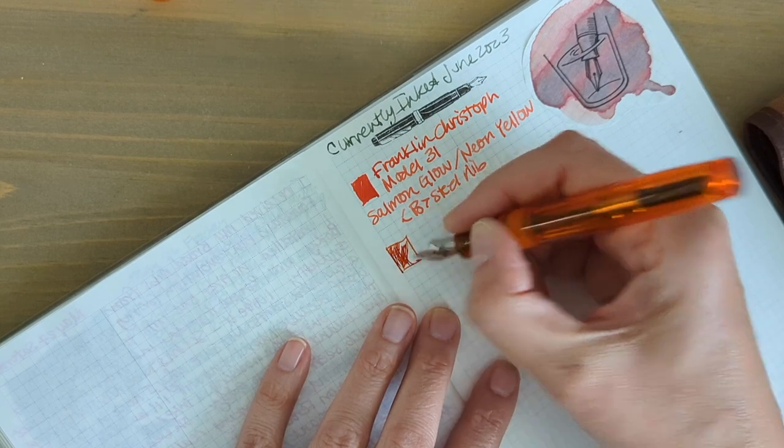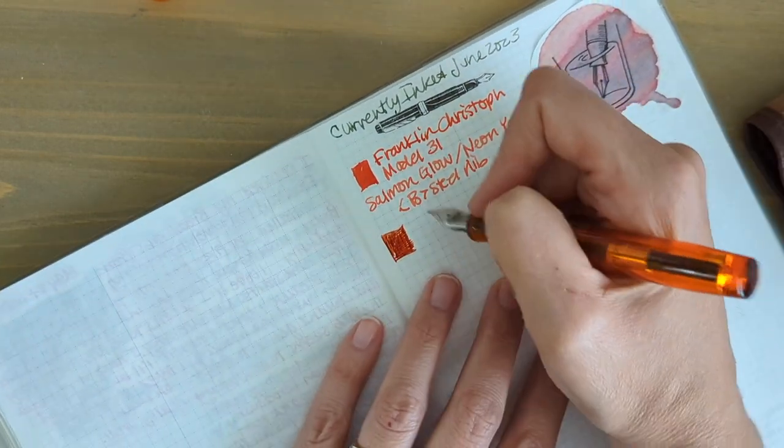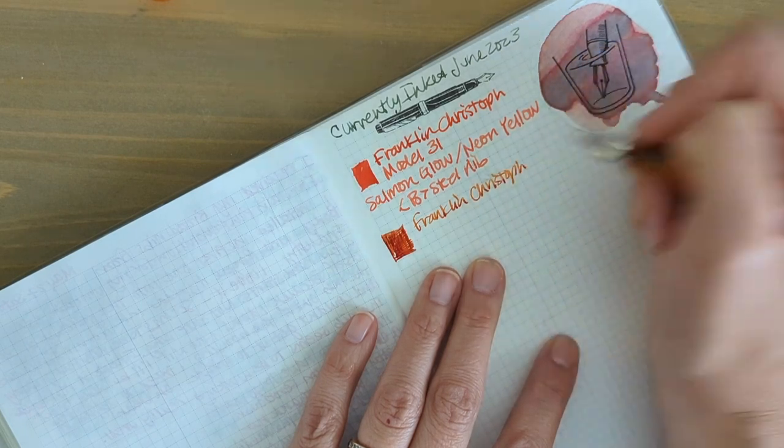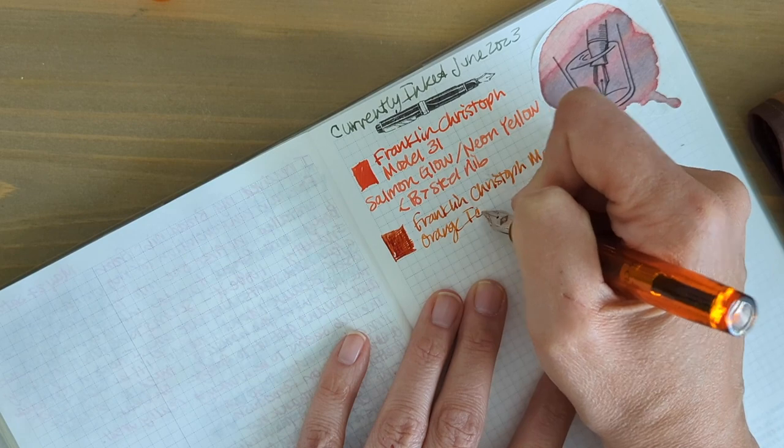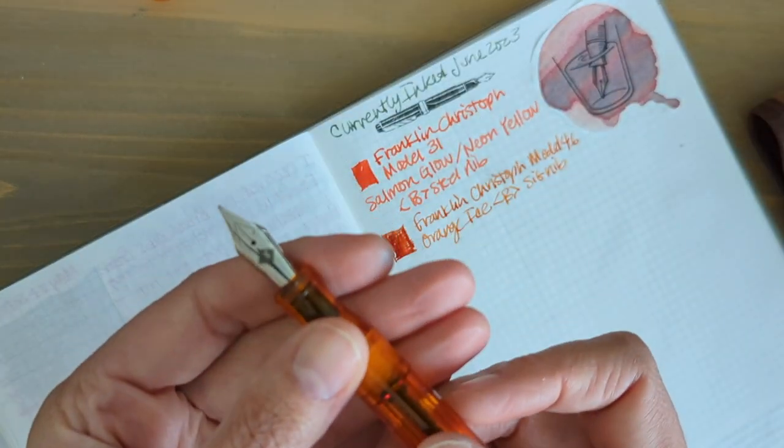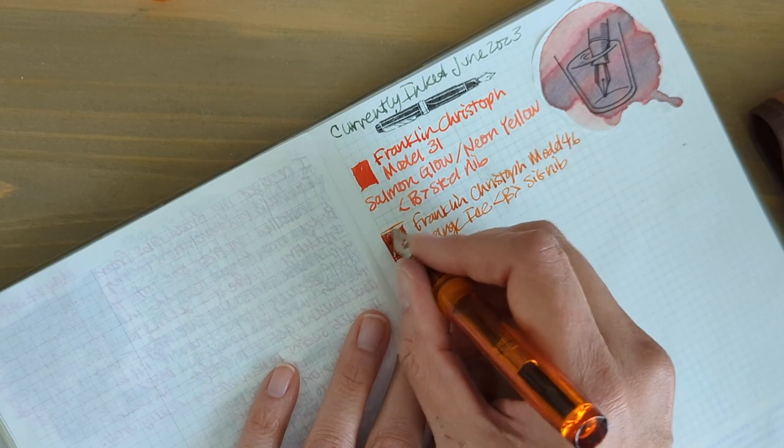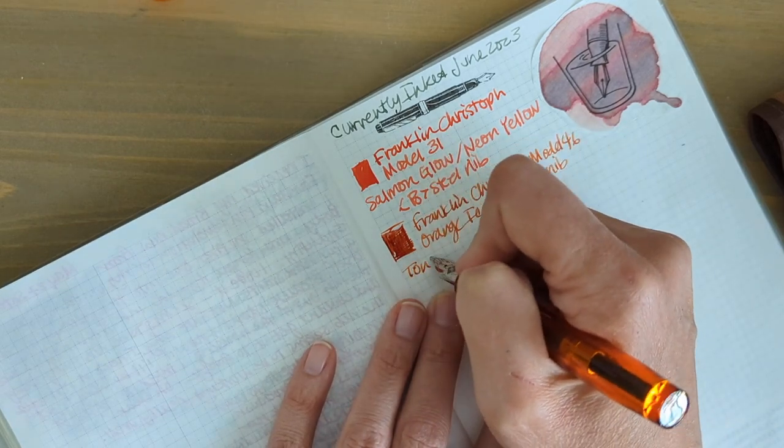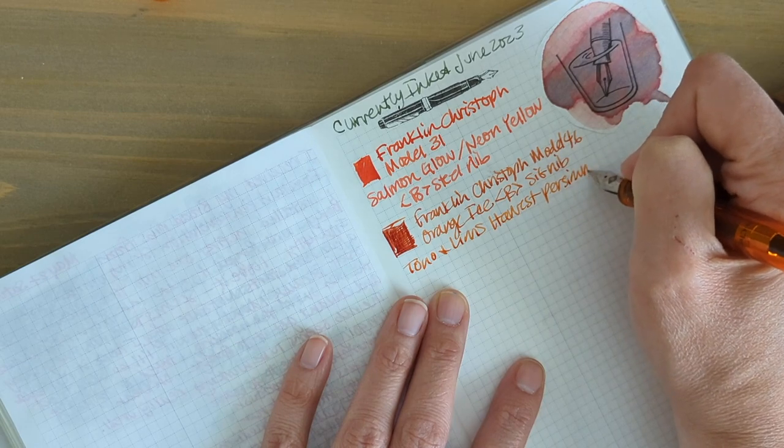There is a sweet spot on this nib. The nib is a broad sig nib and it's got a sweet spot that I somehow have trouble finding. It's a steel nib, cartridge converter, and it's actually very low on ink as you can see. I have this currently inked up with Tonno and Lims harvest persimmon.